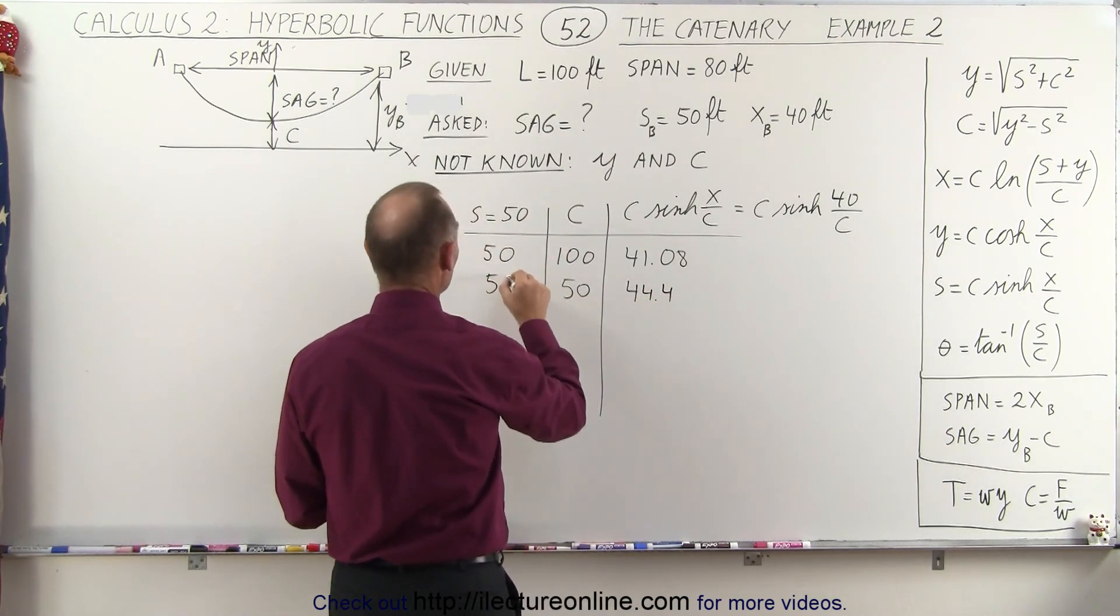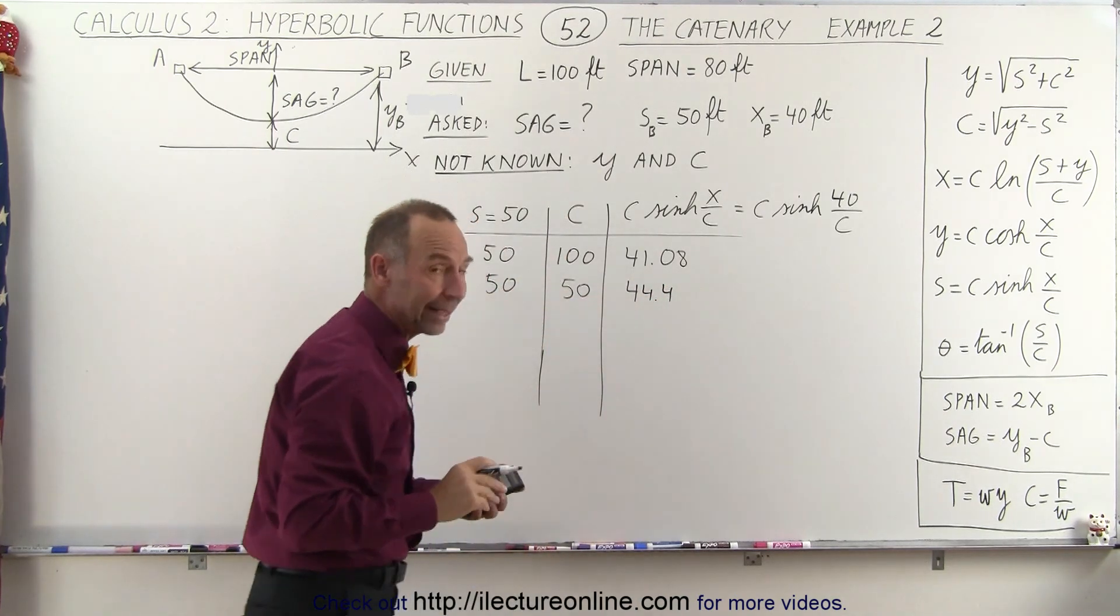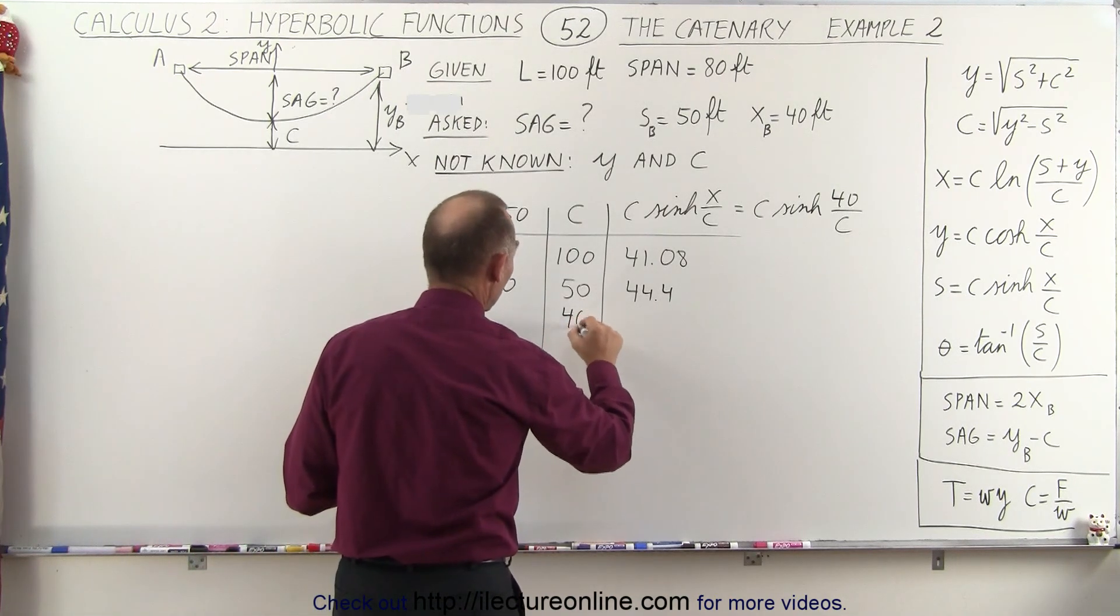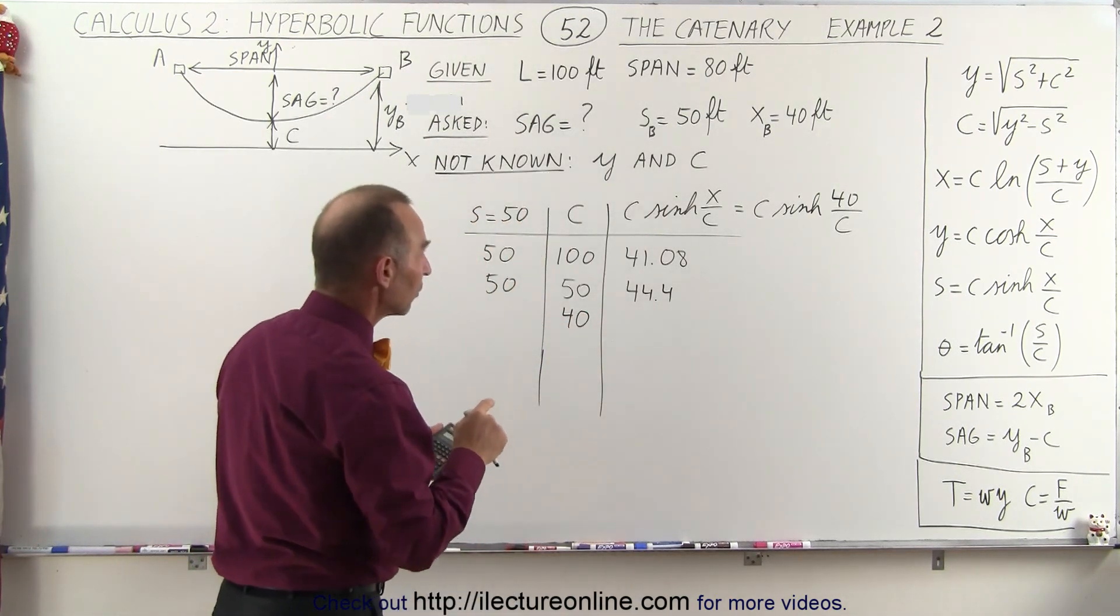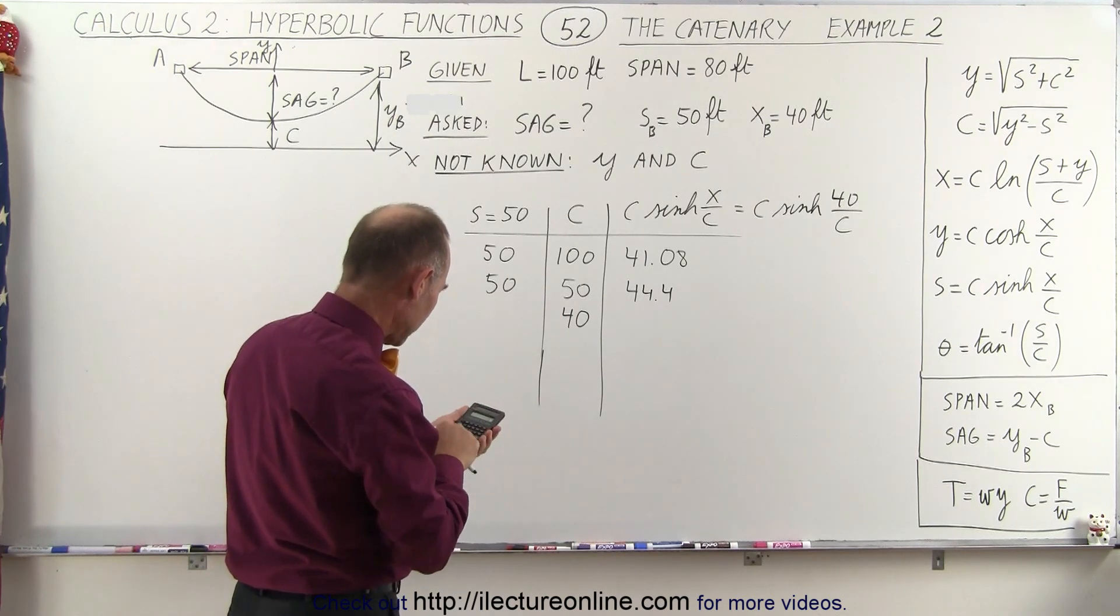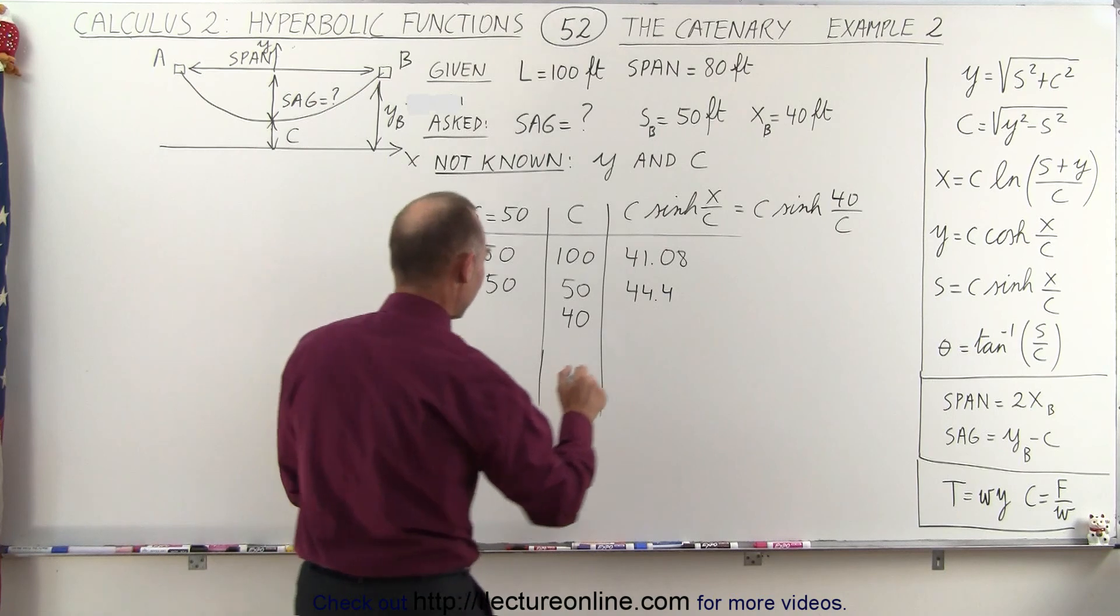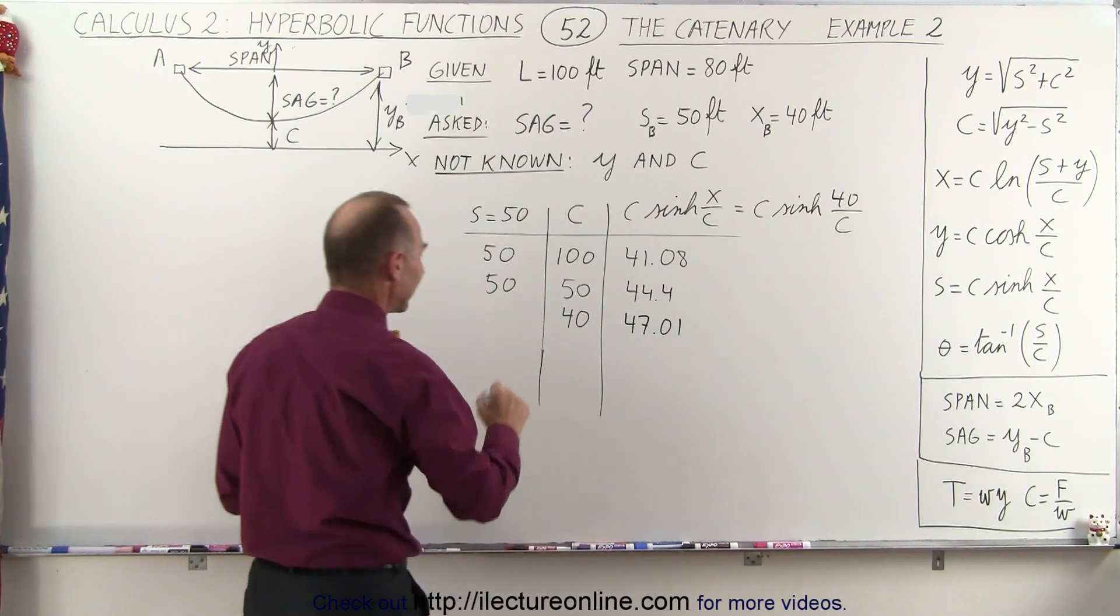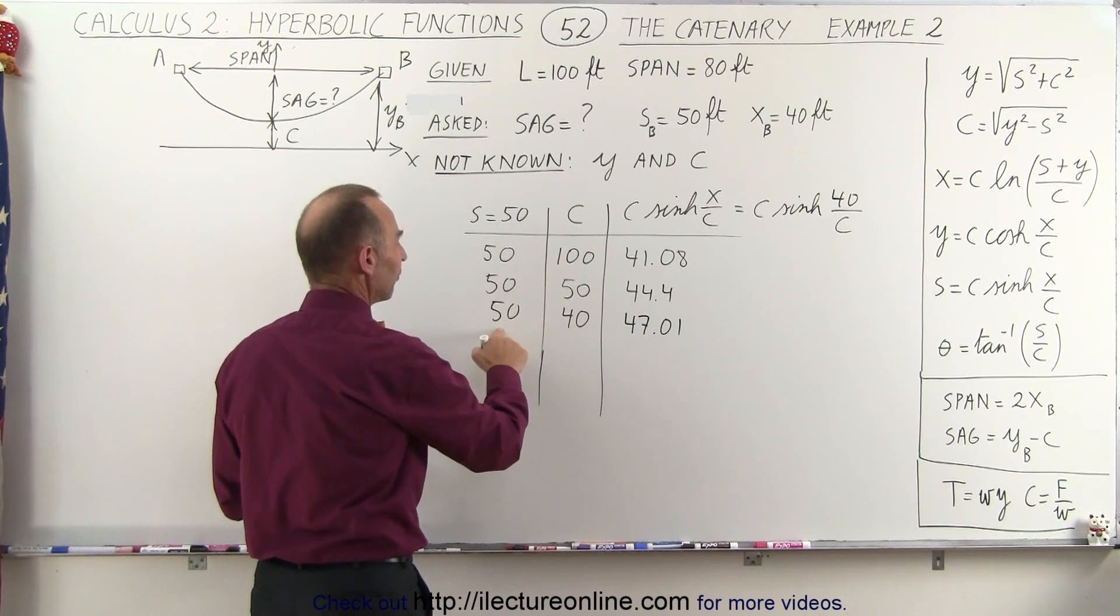So that means we're getting closer to 50 but we're not quite there yet. So we know we're on the right path. So let's try the next value. Let's try 40 and see what we get. So that would be the hyperbolic sine of 1 times 40 and now we get 47.01. So again we're getting closer and closer to 50.